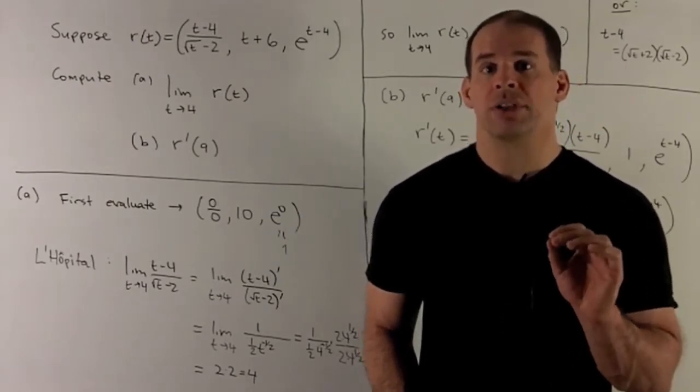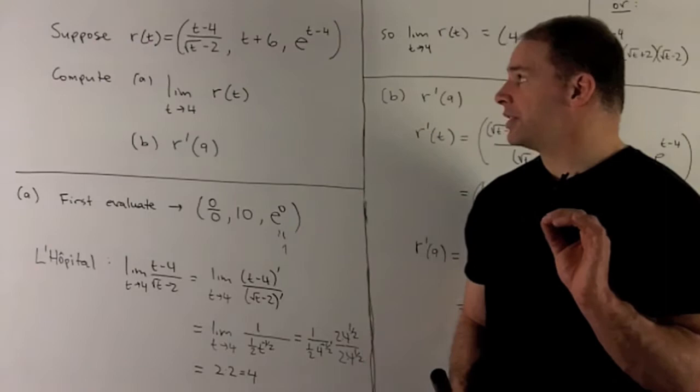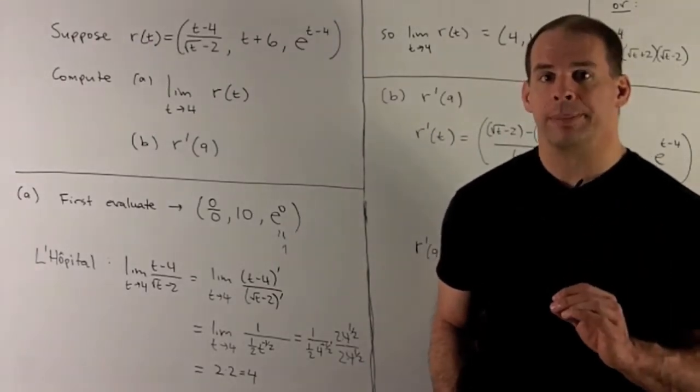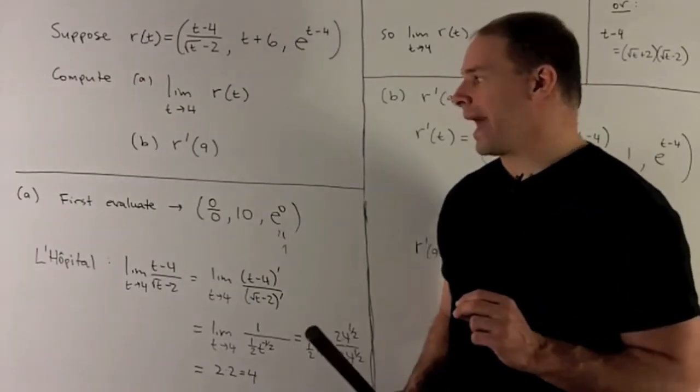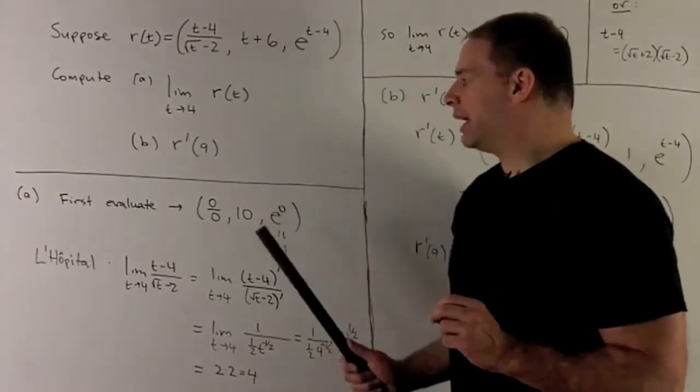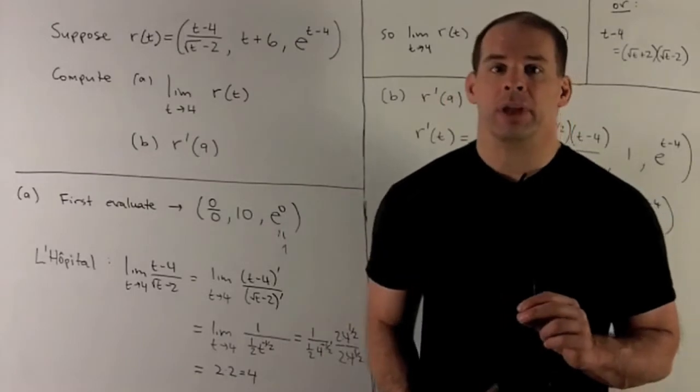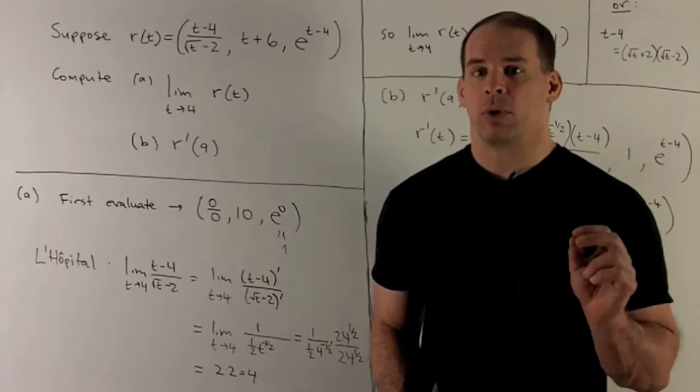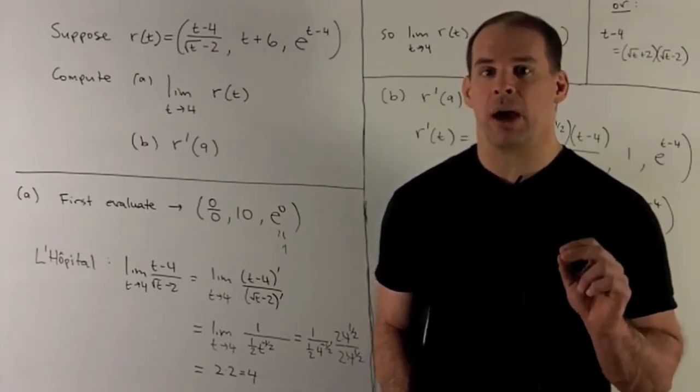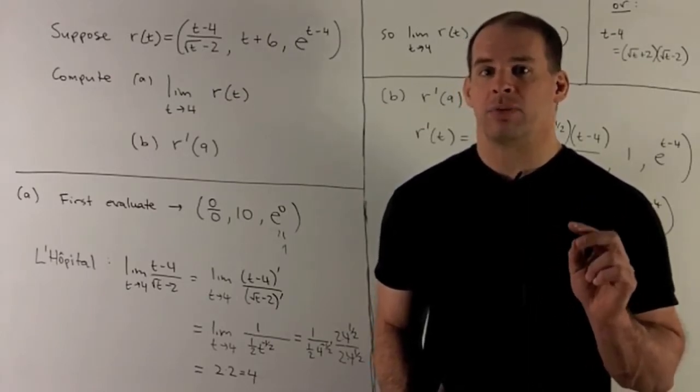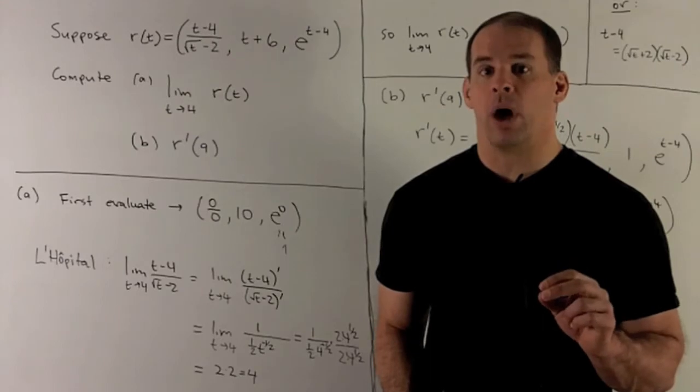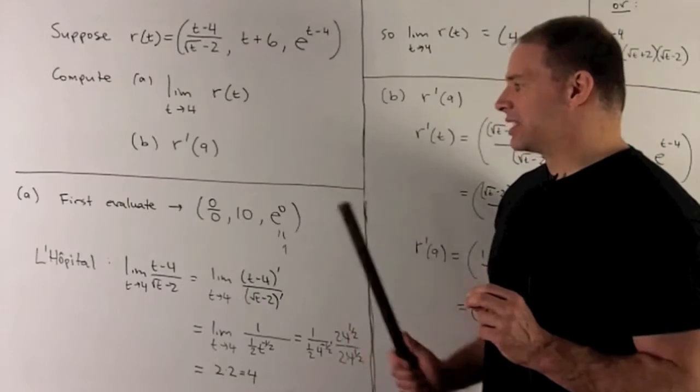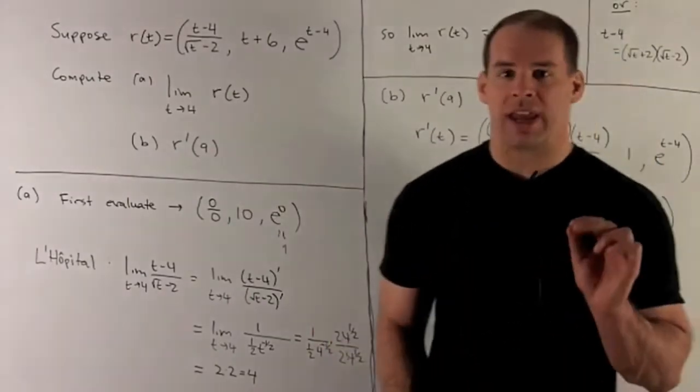For the limit, all these functions look continuous, so let's try to evaluate. If I put 4 into each component, what happens? First component, I get 0/0, so we need to do more work. Second component, 4+6 is 10, perfectly good. e^(4-4) = e^0 = 1, also good. So we're good in the y and z slots, we just have to work out what happens in x.